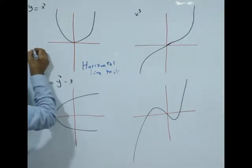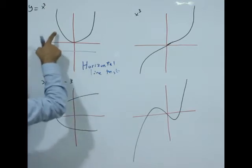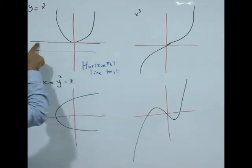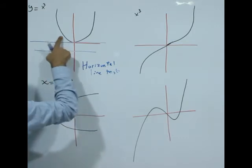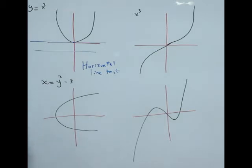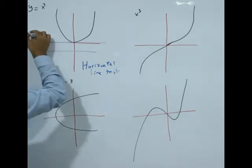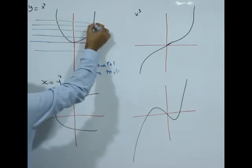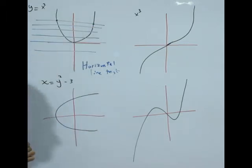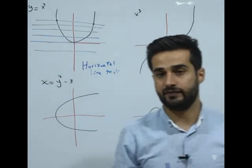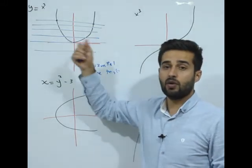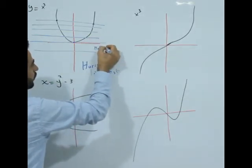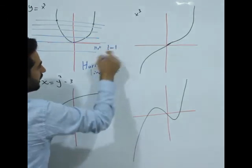Let's sketch a horizontal line. Does this line touch the graph? No, that's okay. Let's sketch another one. Does this blue horizontal line touch the graph? Yes, in one point only — that's also okay. But when we draw more horizontal lines, we know that each line touches the graph in two points. So this is not a one-to-one function.